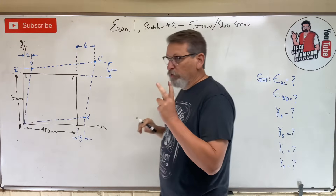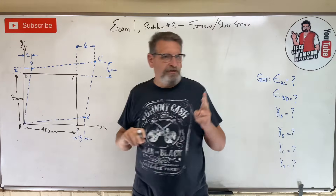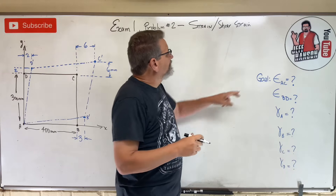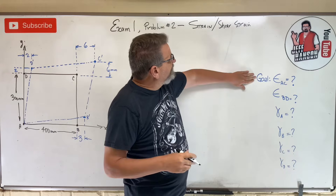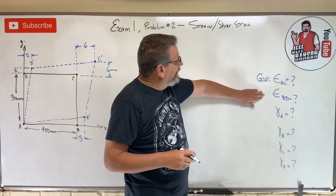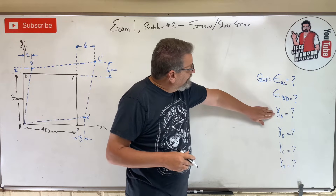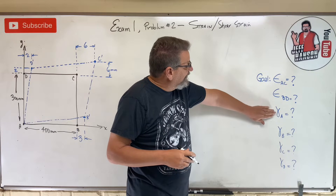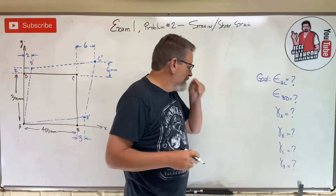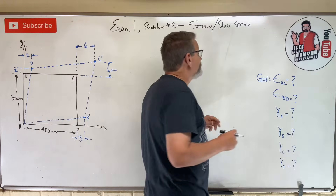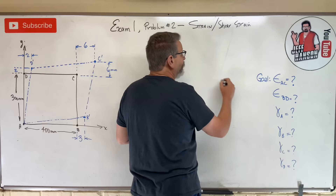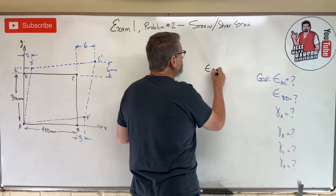We're doing both things. Number one, strain — that's what they asked us to find: strain on line AC and strain on line BD, and then find shear strain at corners A, B, C, and D. So what are these things?